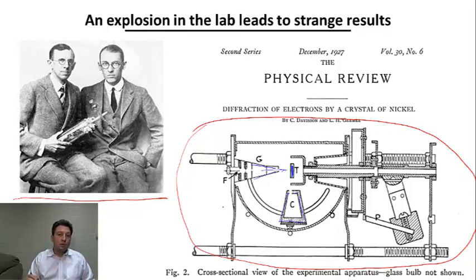But to their amazement, what they saw, the picture of the scattered electrons that they saw, was completely different from the picture they had seen before the accident. But why did the results change? What was different?